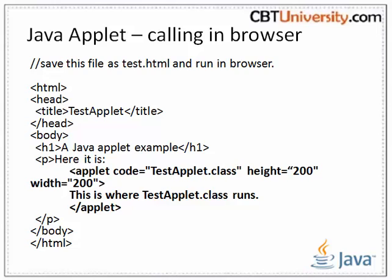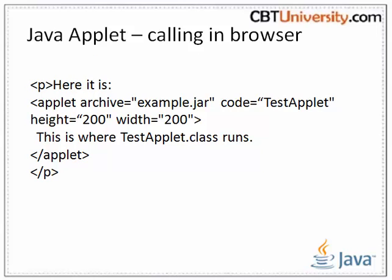Once the applet has initialized itself, it is added to the AWT display hierarchy. To minimize download time, applets can be delivered in the form of a JAR file. In this example, all necessary files are placed in a compressed archive — example.jar. The following embedding code is used within the applet tag, calling the JAR file as a parameter to the archive attribute.